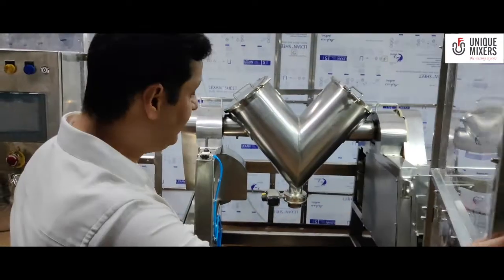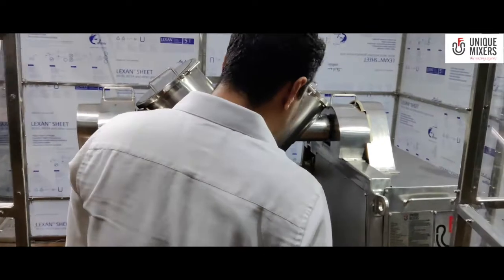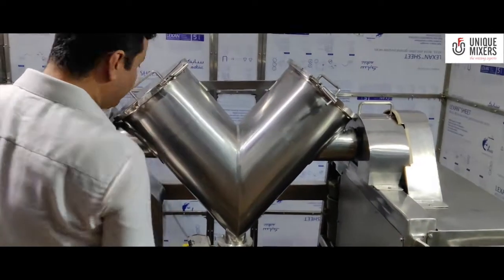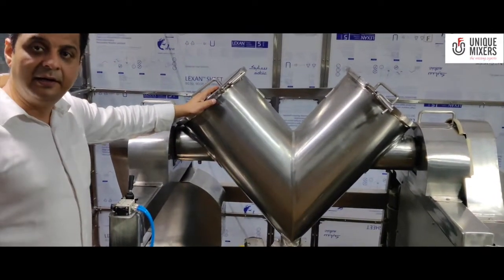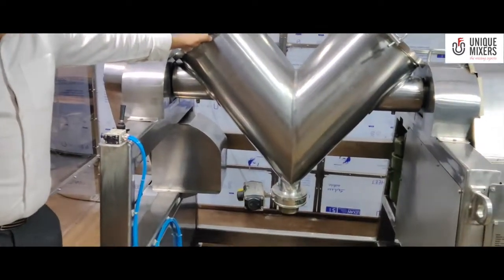That's the unique 75 liter working capacity V-blender with stainless steel 316L contact parts. The non-contact parts are stainless steel 304.